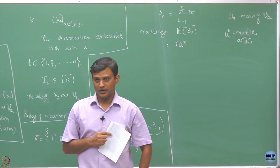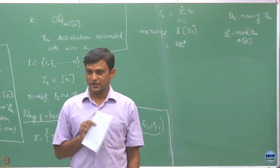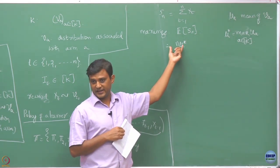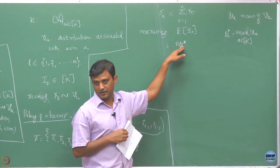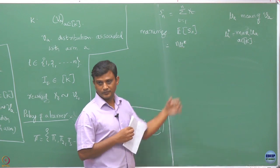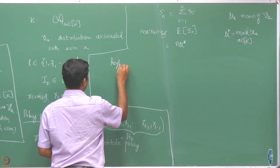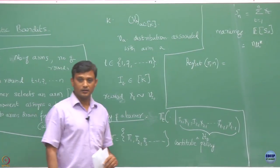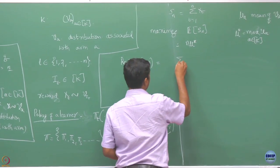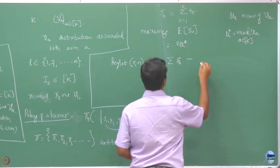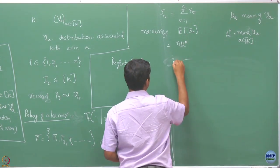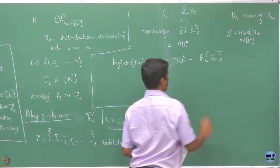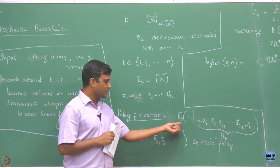This is what you get in expectation when you know the distributions of all arms. But we do not know them a priori — they have been selected by the environment but not revealed to me. Now my goal is to achieve this much expected reward. So I am going to set this as my benchmark when I define the regret of my policy. I define the regret of a policy pi for n rounds as n times mu star minus the expected value of S_n.